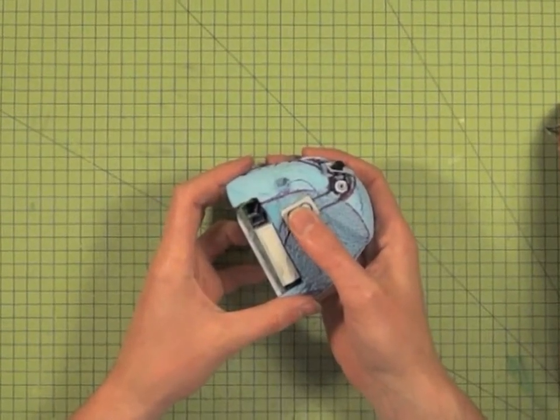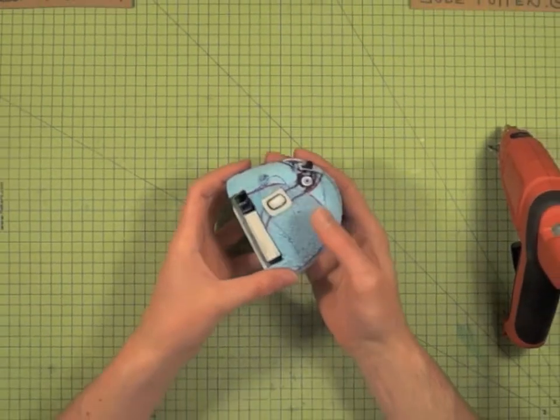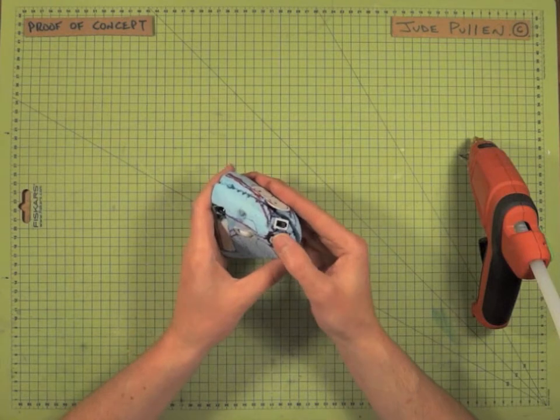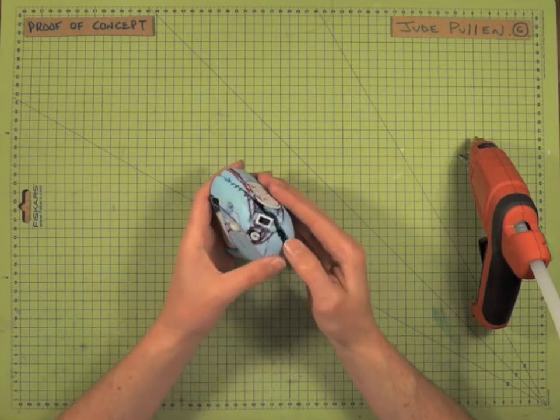One thing to note with the scroll wheel is to make sure it withstands the force of you clicking on it, and also the DPI button is good as well.